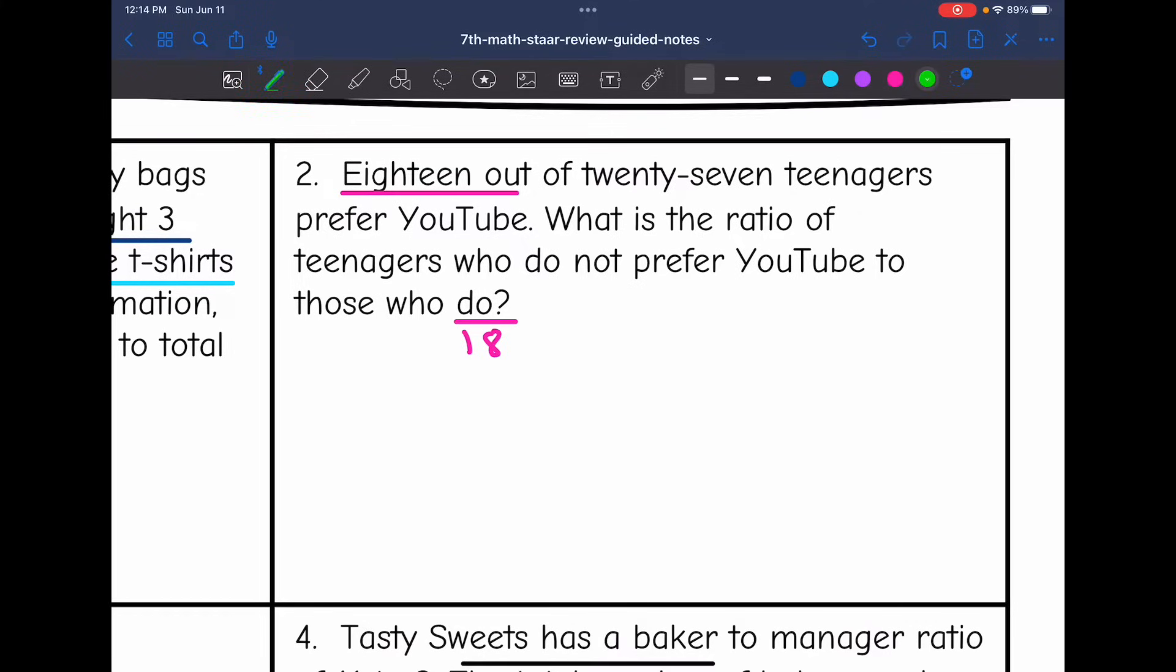I need to figure out how many teenagers do not prefer YouTube by doing the total, which was 27, minus those who preferred YouTube, which was 18. And I get nine. And now that I have these two numbers, I can write my ratio. What is the ratio of teenagers who do not prefer YouTube? That was nine. To those who do, which is 18. And these numbers are both divisible by nine. So I can simplify this ratio by dividing by nine. And I get one out of two.